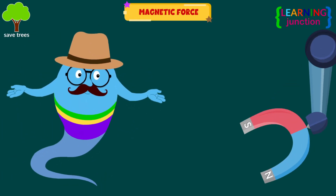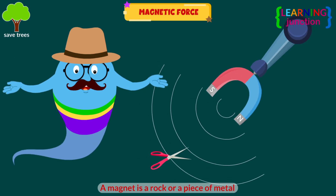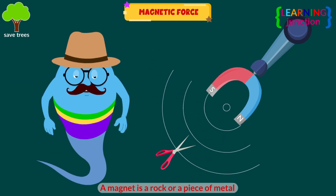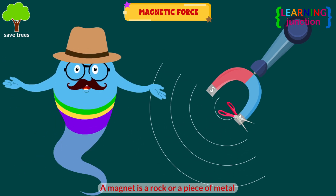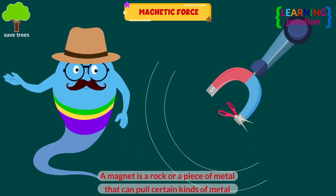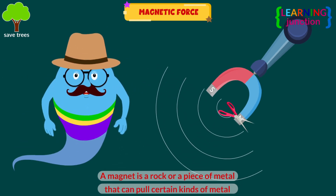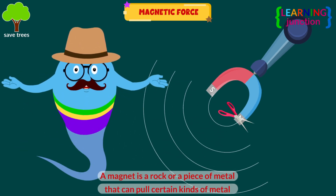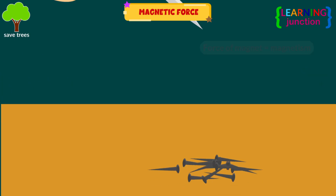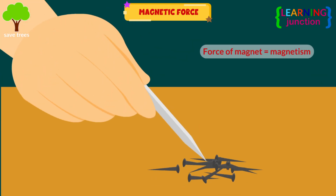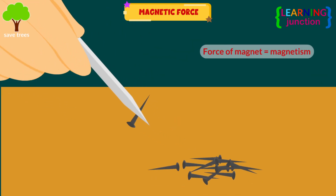Magnetic force. A magnet is a rock or a piece of metal that can pull certain kinds of metal toward itself. The force of magnets is called magnetism.